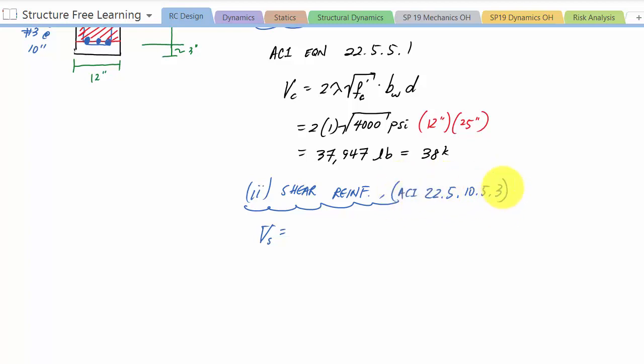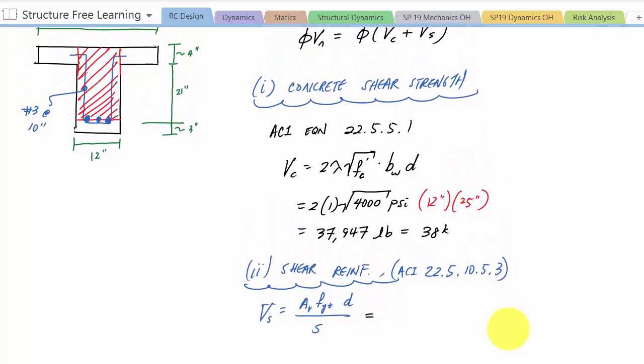Should have been a lawyer, okay. Here and then Av fyt d over s. And fyt just stands for the yield strength of the ties or the shear reinforcement, and in this case we're going to assume we have grade 60 reinforcement for the shear stirrups. So this Av is the area of shear reinforcement.